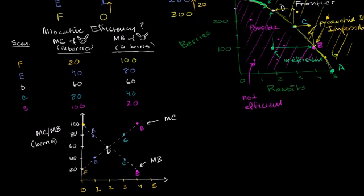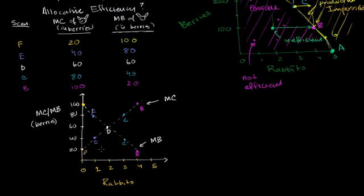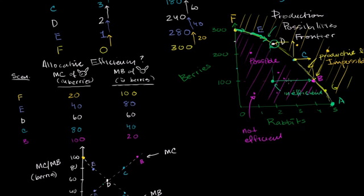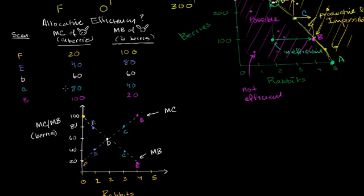As I get closer to scenario D, my marginal cost is still lower than my marginal benefit, so I'll still want to get more rabbits — all the way until scenario D. In scenario D, I'm neutral: I'm willing to pay 60 berries for a rabbit, and that's exactly how much I'd have to give up to get that extra rabbit. Beyond scenario D, the benefit of getting an incremental rabbit is smaller than the cost, so I definitely don't want to move past D.